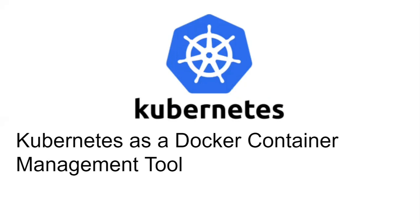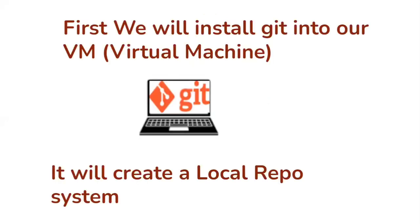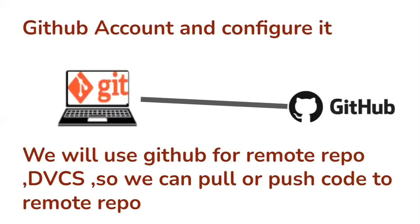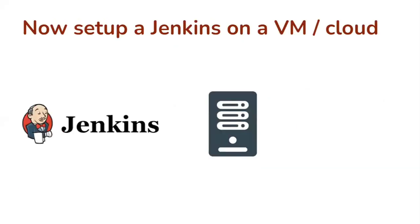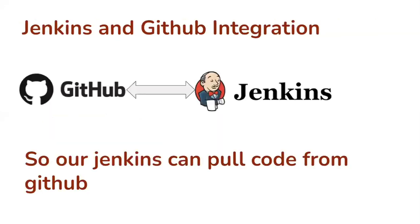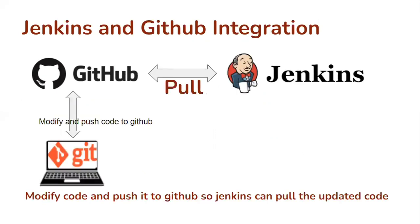Now let's take an overview of our CI-CD pipeline. First we install Git into our Linux system or local machine. Then we create a GitHub account and configure it with Git and the local system — it is a complete DVCS system, so we will use GitHub to push our code. Then we create a Jenkins server on a VM or on the cloud, and integrate our GitHub with Jenkins so Jenkins can pull the updated code from GitHub. That is the benefit of the Jenkins and GitHub integration — when a developer pushes code to GitHub, Jenkins can automatically pull the updated code from it.